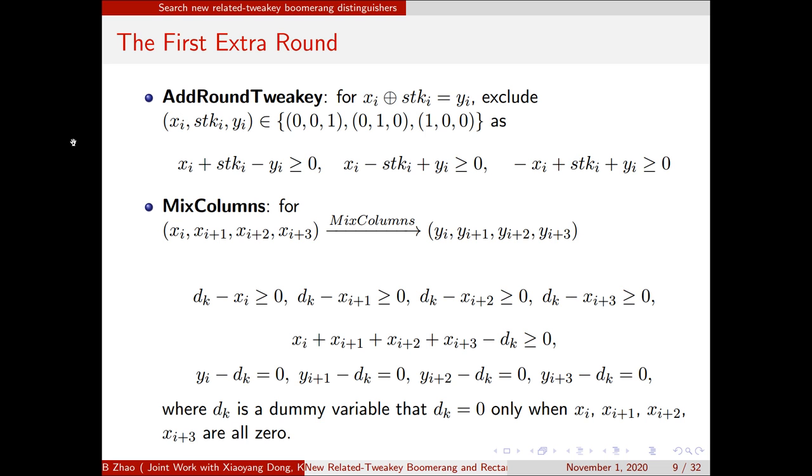For the first extra round, we denote the add-round tweakey is X_i XOR TK_i equals 1. Since the difference of X_i and TK_i is unknown, we can exclude three conditions using the following three equations. For the mix-columns, since it is after the sub-byte operations, if one byte is active, all four output bytes will be active. So we use the following equations to constrain that, where dK is a duality variable. dK equals 0 only when all the X_i are 0.